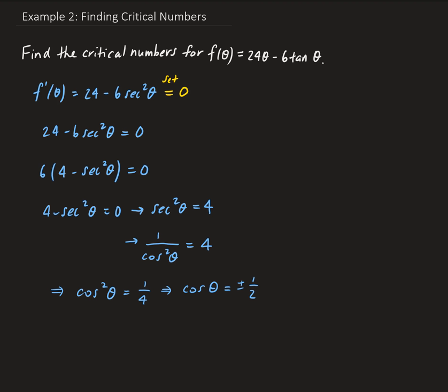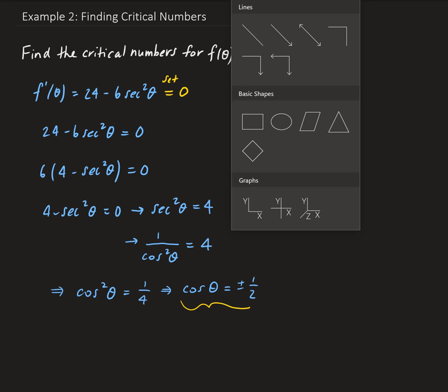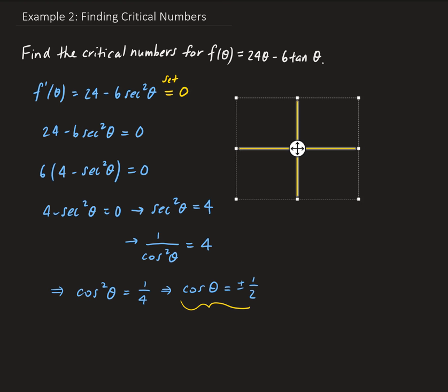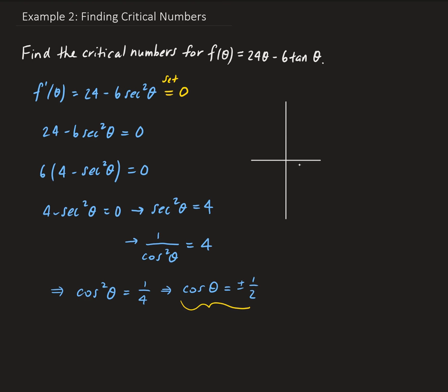Now we need to solve for theta from this equation. We need to go back to the unit circle. We're going to look for the solutions from 0 to 2 pi first, and then come up with a general solution. We're looking for values of theta where cosine theta equals plus or minus 1/2.